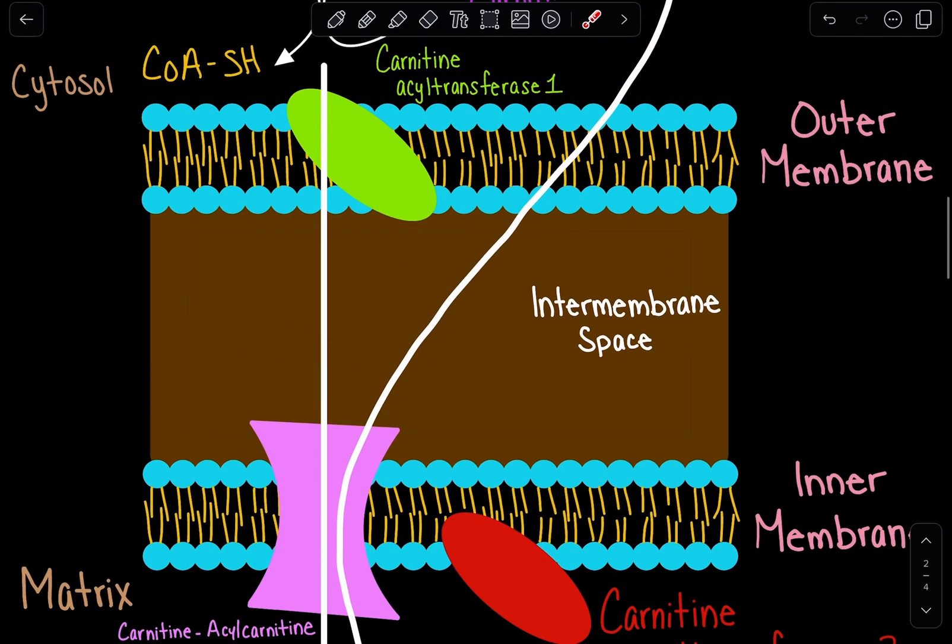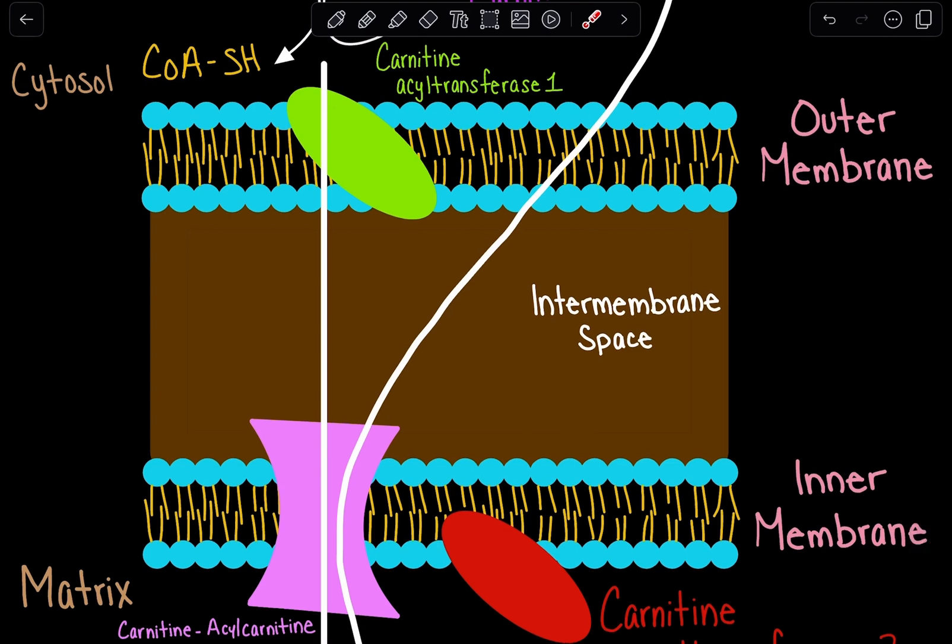A general rule of thumb to remember is that if your fatty acid has less than 12 carbons, it will be able to pass through the inner membrane without the help of this carnitine system.